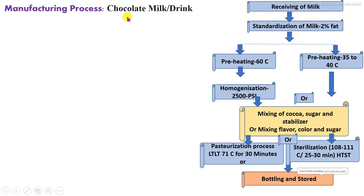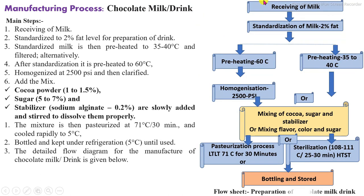The main steps involved in the manufacturing process of chocolate milk or drink: after receiving cow or buffalo milk, it is pre-processed, then standardization is carried out to adjust the fat to below two percent. After standardization, the milk may be homogenized using a single-stage homogenization process, then milk is added with the required ingredients.